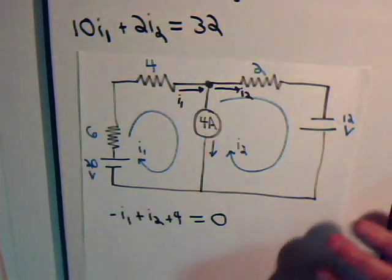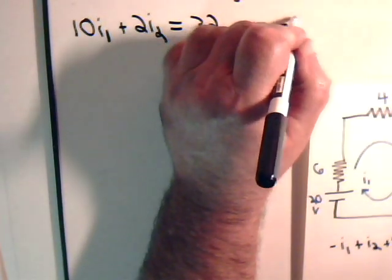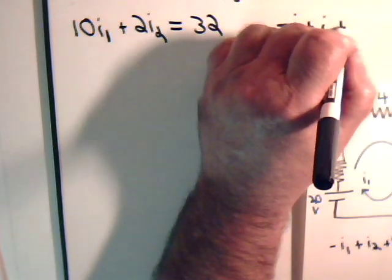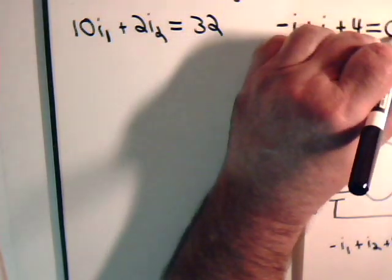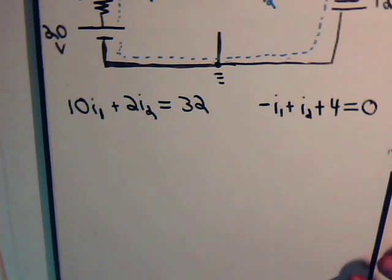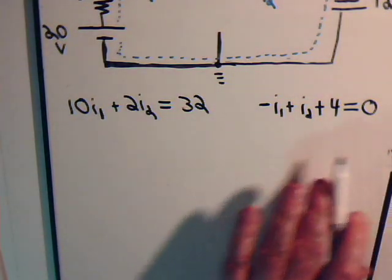Here we have minus I1 plus I2 plus 4 equals zero. Let's write that up here: minus I1 plus I2 plus four equals zero. Now we have two equations and two unknowns: I1 and I2.